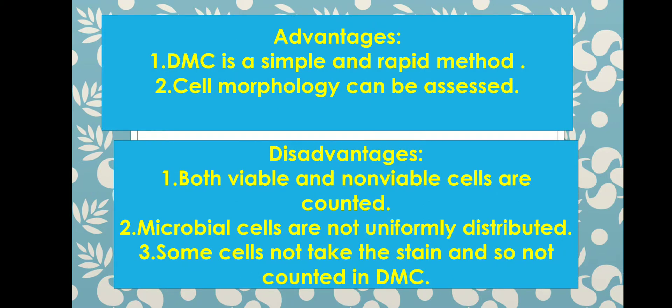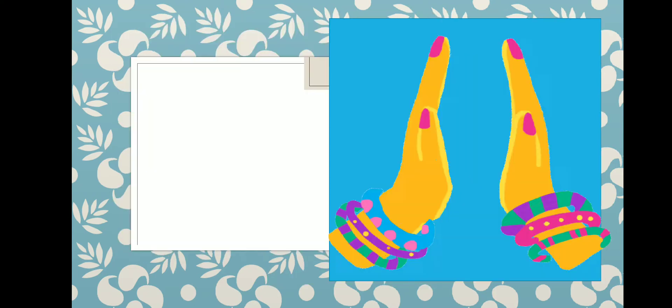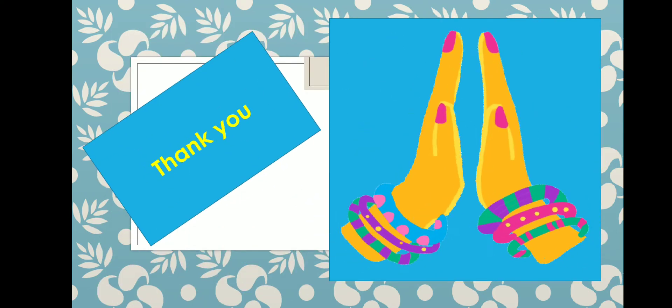Advantages: DMC is a simple and rapid method, and cell morphology can also be determined. Disadvantages: both viable and non-viable cells are counted; microbial cells are not uniformly distributed; and some cells do not take the stain and so are not counted in DMC. This is the Direct Microscopic Count, in which cells are observed and counted. Thank you for listening.